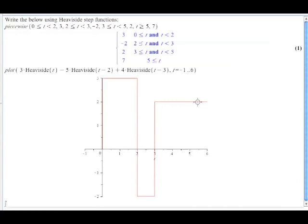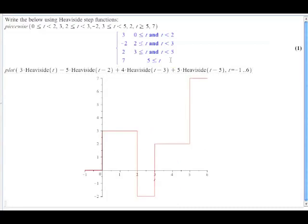The last thing I need to do is I need to make sure that at time 5, I get up to 7. I'm at height 2 right now, so I'm going to have to add 5 to that. So, plus 5 times the Heaviside, and this switch I want to turn on at time 5. And there we have how to model this piecewise defined function using Heaviside functions.